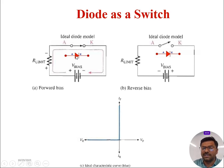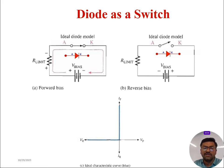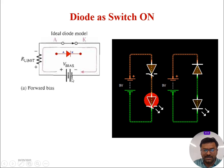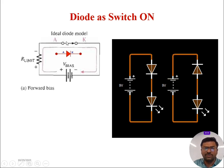If we consider an AC signal, then this condition is very, very important. Now we will see some animation to help you out. So let us observe: if the P terminal of the battery is connected to the anode terminal of a P-N junction diode, then the diode is switched on.